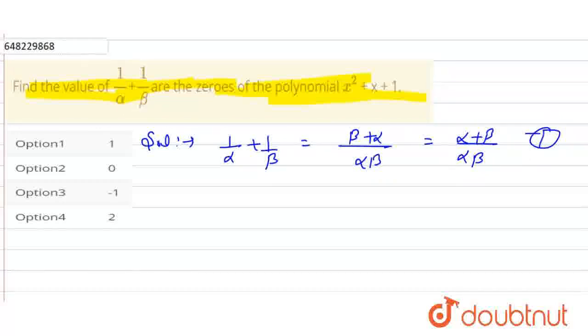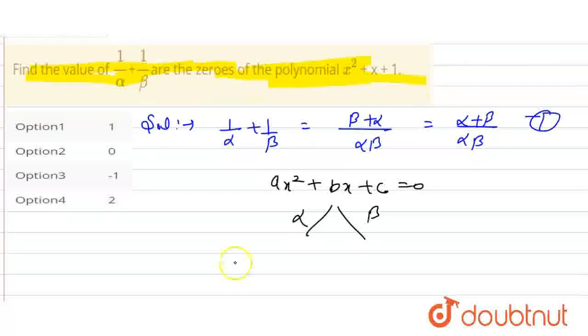Now, if there is a polynomial ax² plus bx plus c equals zero with two roots alpha and beta, then the sum of the zeros, alpha plus beta, will be minus b by a, and alpha beta will be c by a.